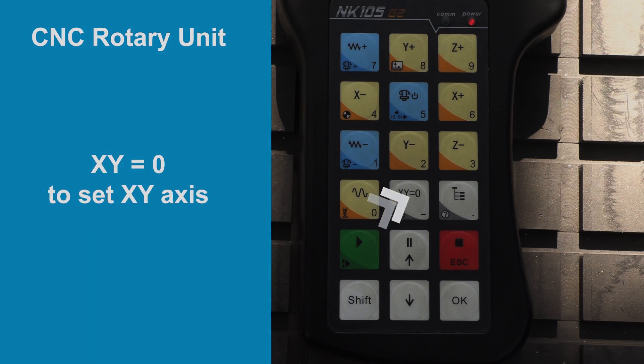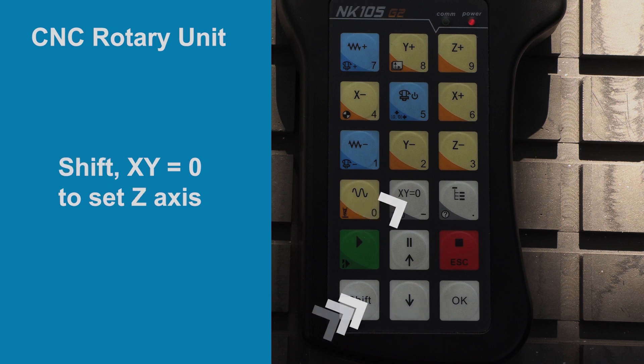Ok, and once we are happy with that, we set the x and y coordinates by pressing the x-y-0 button and then press ok. And for the z-axis, we hold down shift and press x-y-0 again, and then press ok.